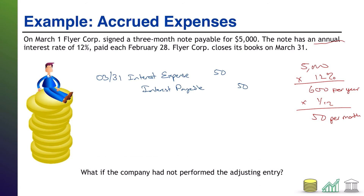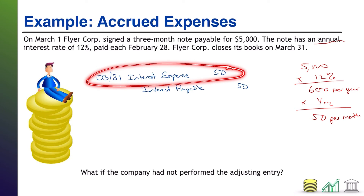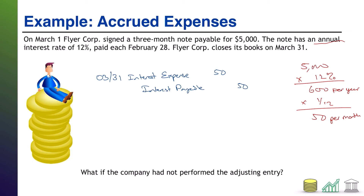Hypothetically, what if we had not done this? Why is this a big deal? From an income statement standpoint, had we not recorded this adjusting journal entry, we would not have recorded this interest expense, which means our expenses would have been too low, and therefore our net income would have been too high — we would have overstated our net income. Also, interest payable is a liability on the balance sheet; had we not recorded it, we would understate our liabilities. Overstating net income and understating liabilities is a dangerous combination because we're essentially lying to investors, and you don't want to overvalue your company.